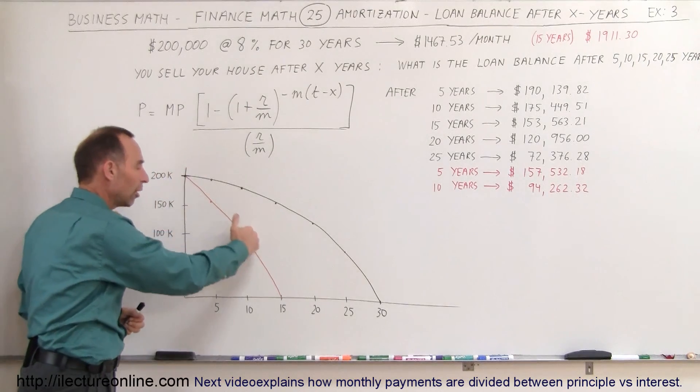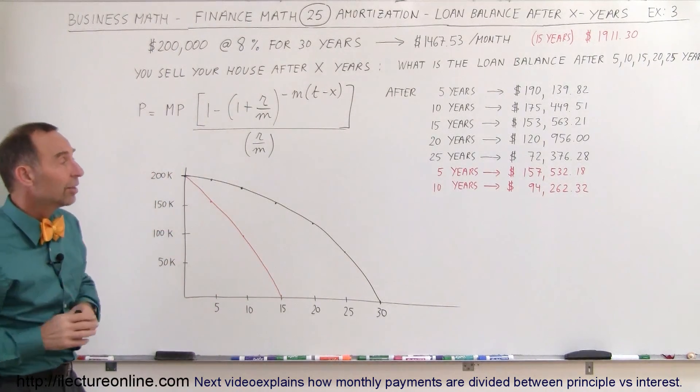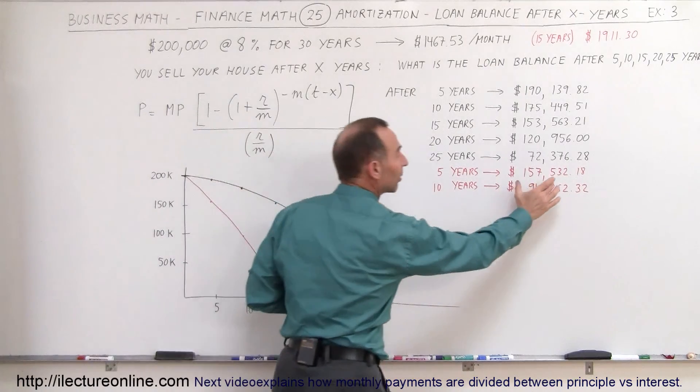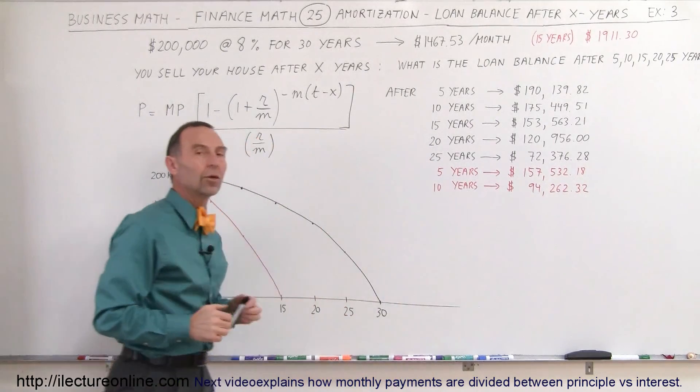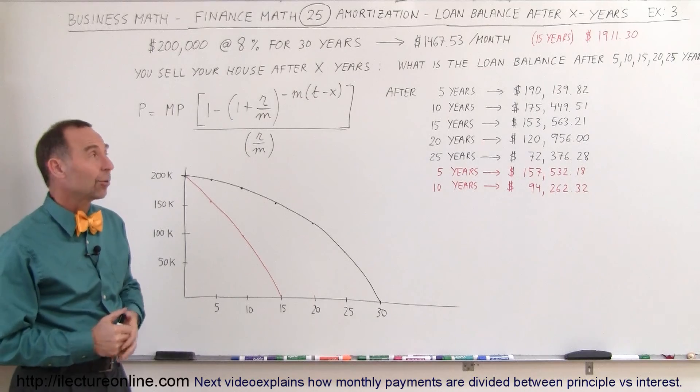So 15-year loans are much faster at paying off the loan and initially in the beginning of the loan you already start making a very good dent into that loan debt compared to getting a 30-year loan.